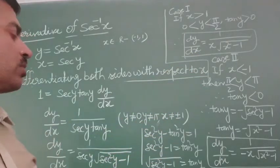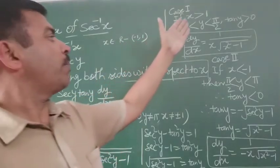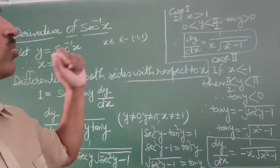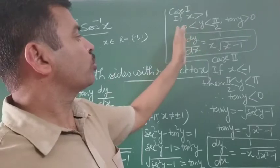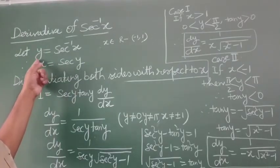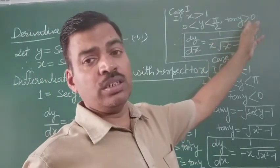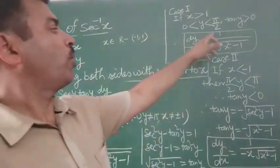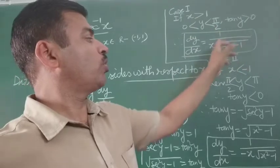Before finalizing, we consider the value of x. If x is greater than 1, then y must belong to 0 to pi by 2, because the sec inverse value will be positive, and tan y is also greater than 0. So dy by dx equals to 1 upon x root (x square minus 1), because x value is greater than 1, so it will not equal 0.